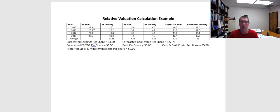So here we're using the price-earnings multiple, the price-to-book multiple, and the enterprise value to EBITDA multiple in order to attempt to calculate the value of the firm. You could also use price-to-sales or price-to-cash flows — there are a number of different multiples you can use. I've chosen these three as an example. We've got four years of historical data for our firm and our industry, which we're going to use to provide historical and comparative context for what the appropriate multiple should be.